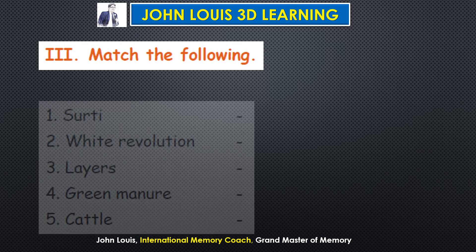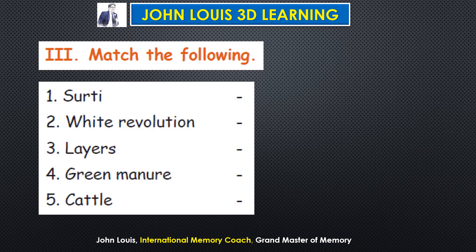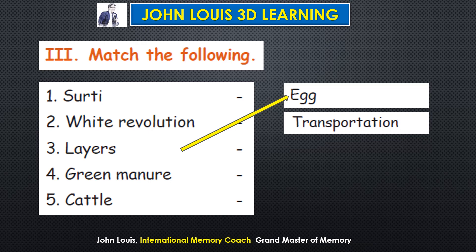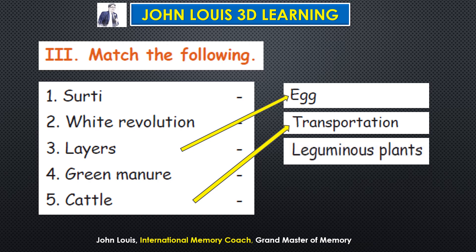Match the following. Left side items: white revolution, layers, green manure, cattle. Layers are matched with egg. Green manure is matched with leguminous plants. Cattle are matched with transportation.